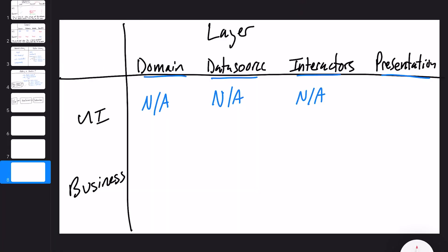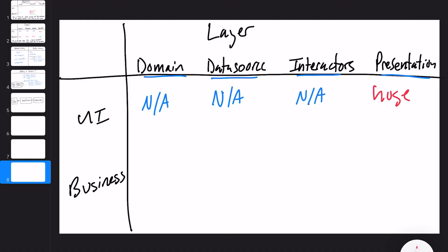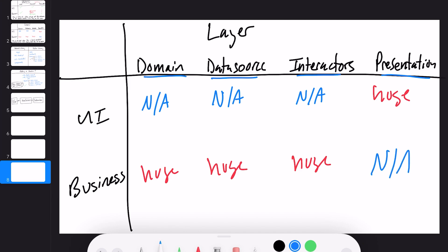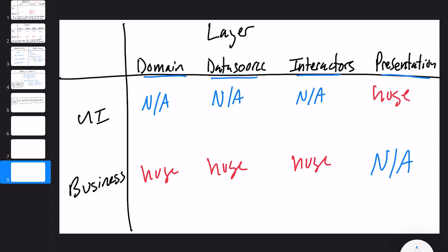If you had a small project with two screens, this is fine, but no project has two screens, so really this is never fine. When it comes to the presentation layer with the UI component, this is going to be huge. If you have an app with 50 screens — which is probably not uncommon — putting 50 screens in one module is dumb. You might as well not be modularizing at all. The same goes for the business side — these modules would all be massive.